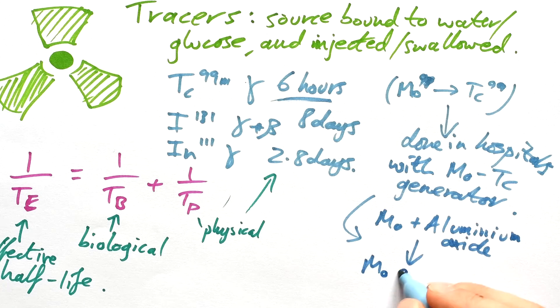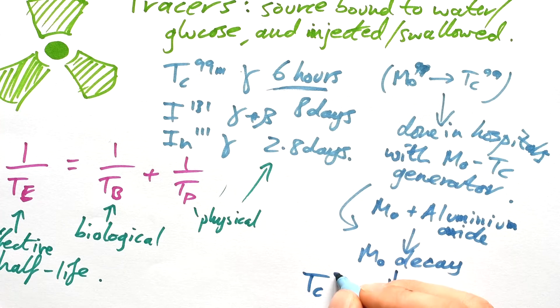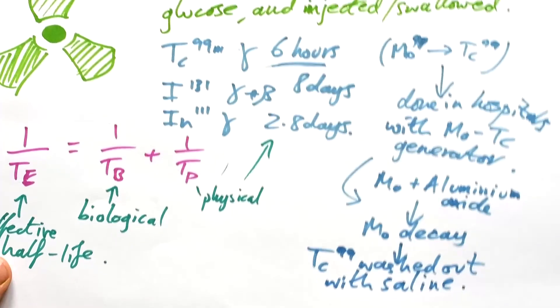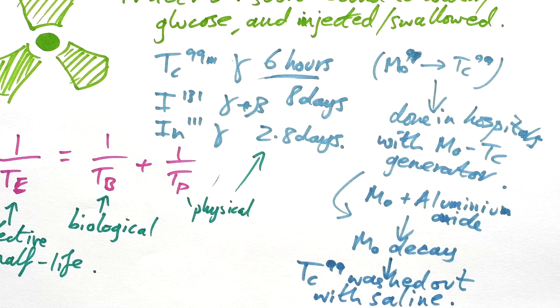That makes the molybdenum decay into technetium. And the technetium-99m is washed out with saline. That's just salt water. And then you can just inject that solution straight into a patient ready to go as a tracer.